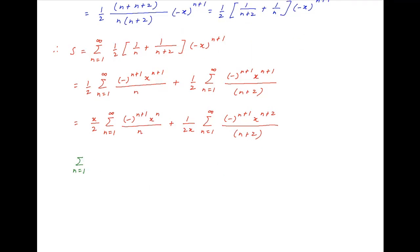Now the first summation, which is summation n equals 1 to infinity of minus raised to the power n plus 1 times x raised to the power n upon n, can be expanded as x minus x squared upon 2 plus x cubed upon 3 minus and so on. Note that this is equal to ln of 1 plus x.